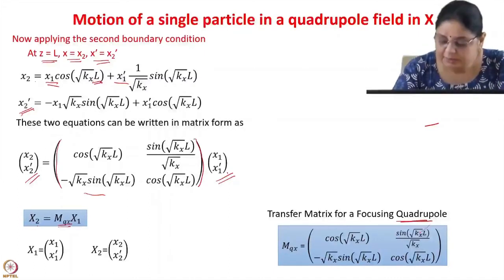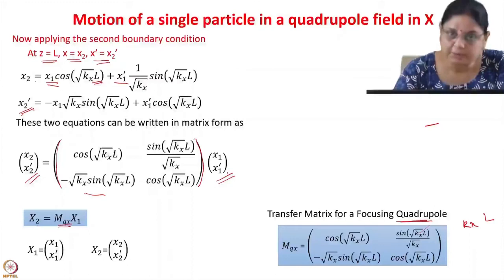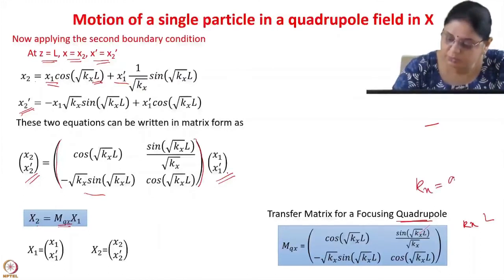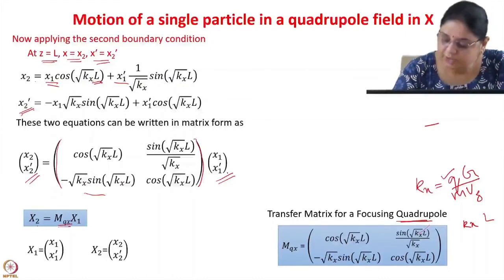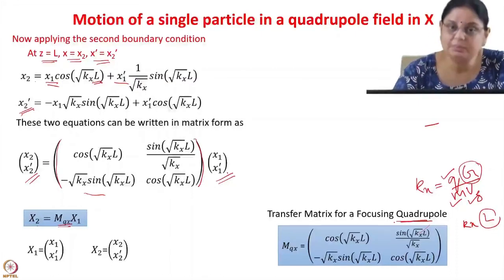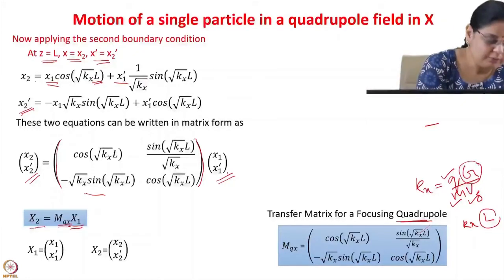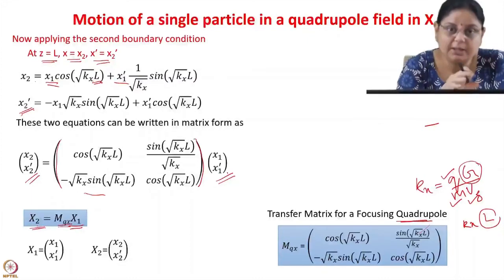The transfer matrix depends only on kx and L. kx = Q·G / (m·vz), so it depends on the charge Q, mass m, velocity vz of the beam, and gradient G of the quadrupole. Thus, if you know the beam and quadrupole parameters and the initial coordinates, you can find the final coordinates of the charged particle at the end of the quadrupole.